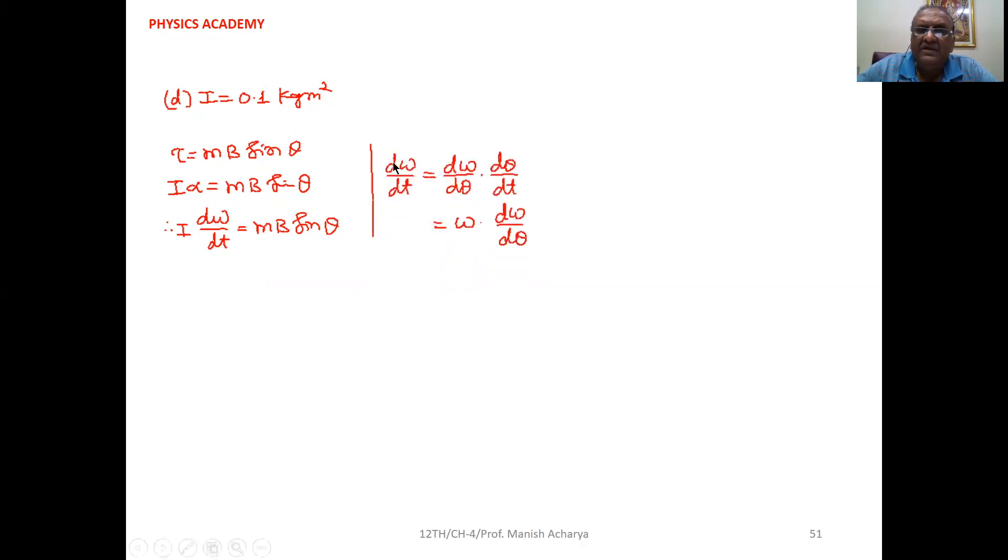Now here dω/dt we can rewrite as dω/dθ × dθ/dt. But this dθ/dt is called angular speed and dω/dθ as it is.